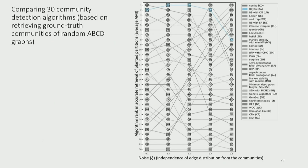Here are the comparisons of all the algorithms. I've colored the algorithm we developed in blue and the others in different shades of gray. On the y-axis I have the ranks of these algorithms based on average AMIs, and on the x-axis I have the amount of noise in the data generation process.